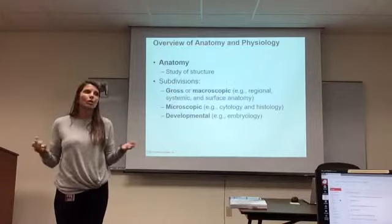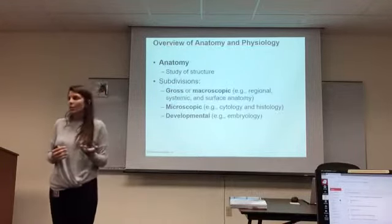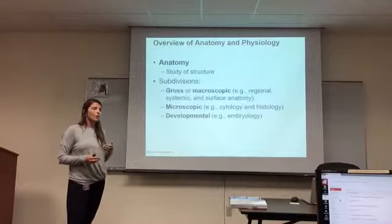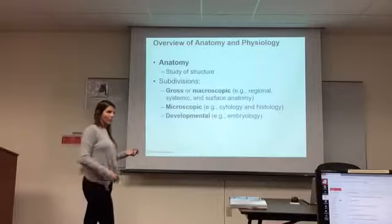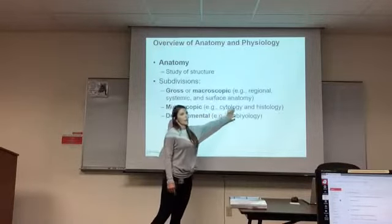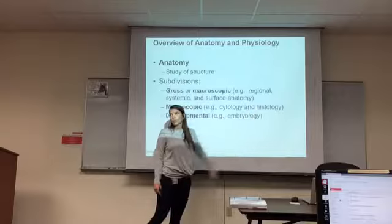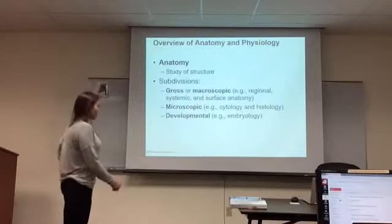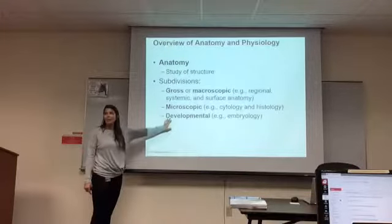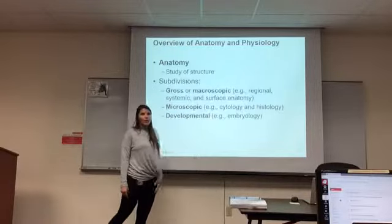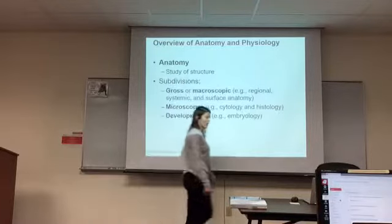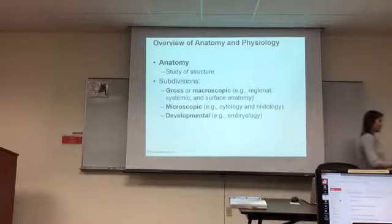Microscopic anatomy includes cytology and histology — two words you'll need to become familiar with. Cyto means cell, so cytology is the study of cells. Histo means tissue, so histology is the study of tissues. A group of cells makes up a tissue — those are the biological levels of organization. The last type of anatomy is developmental anatomy, which includes embryology — the growth and development of an embryo into a fetus. That's my favorite topic to teach, covered in ANP 2402.